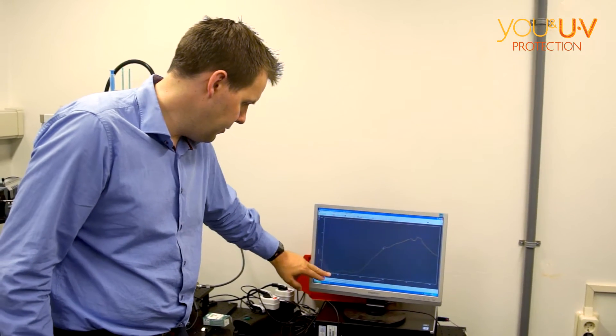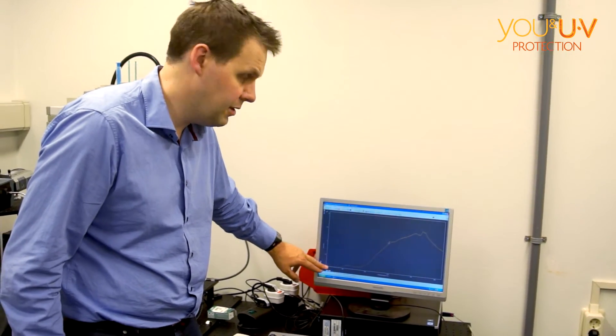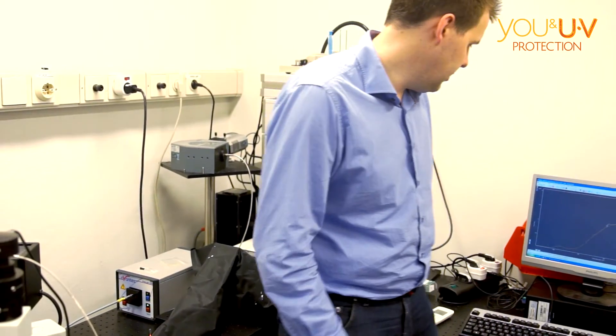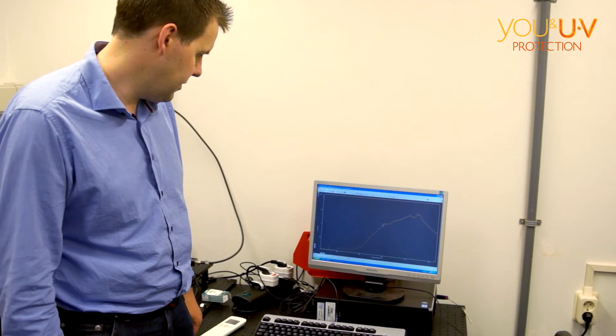This sort of lamp is very useless for the tests that you want to do, because you want to look in the UVA, UVB region, which is down here. So to deal with that, we turn on a different lamp, which is a deuterium lamp.